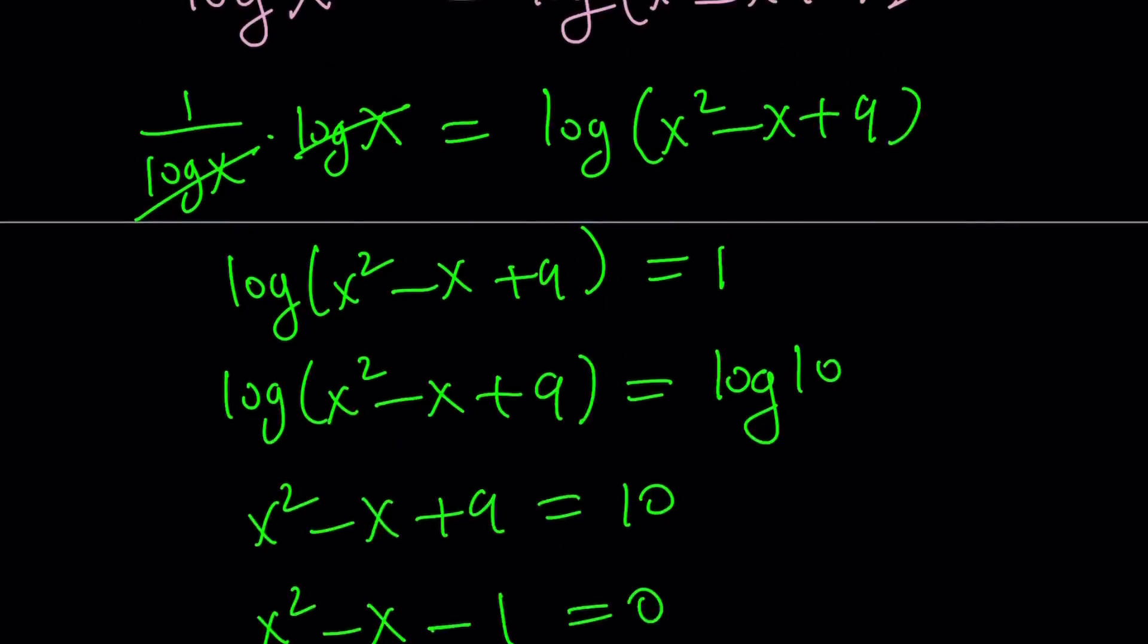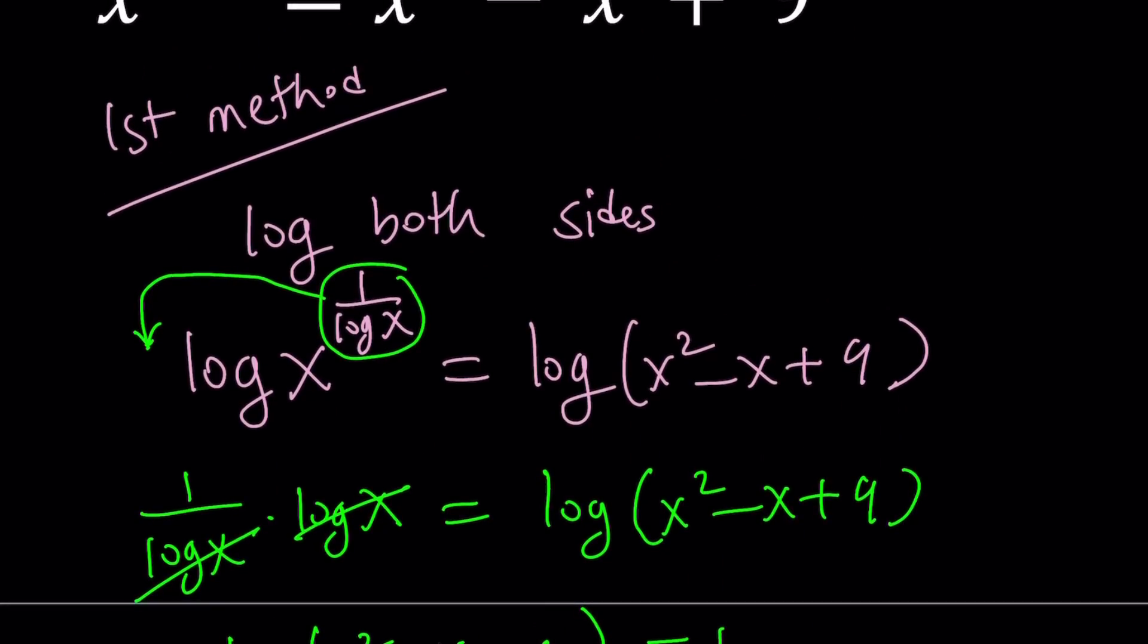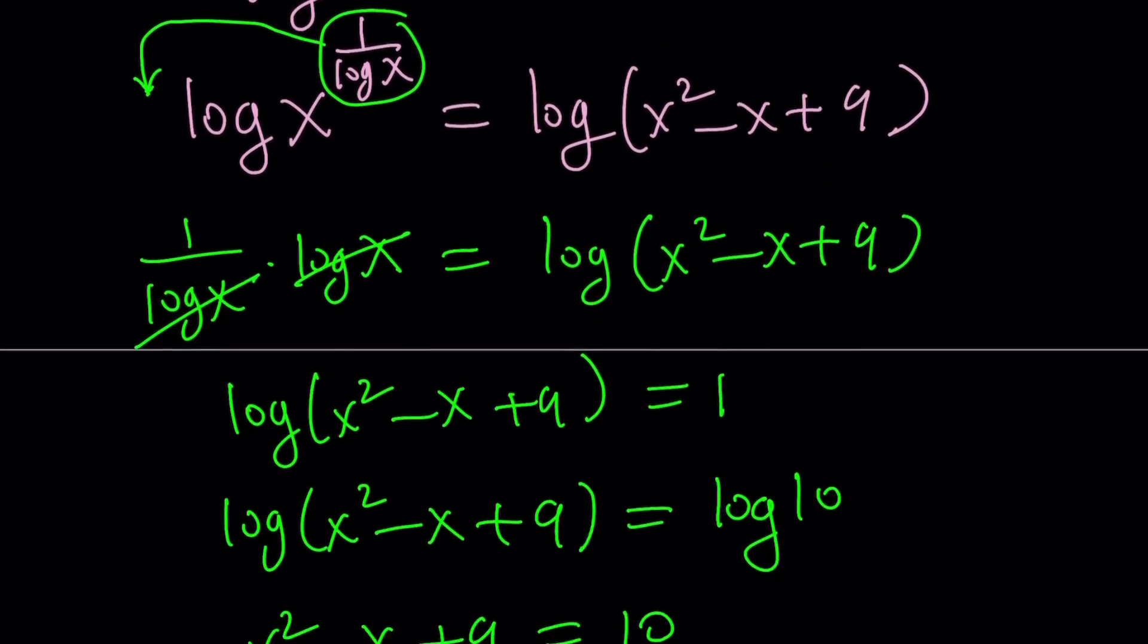One thing that I forgot to say, because we have log x, x needs to be positive, and we also don't want log x to be 0. So, remember the original problem. It was x to the power of 1 over log x equals x squared minus x plus 9. So, you don't want log x to be 0, which means you don't want x to be 1, but at the same time, you want x to be positive. So, x is positive, but different from 1. Make sense?